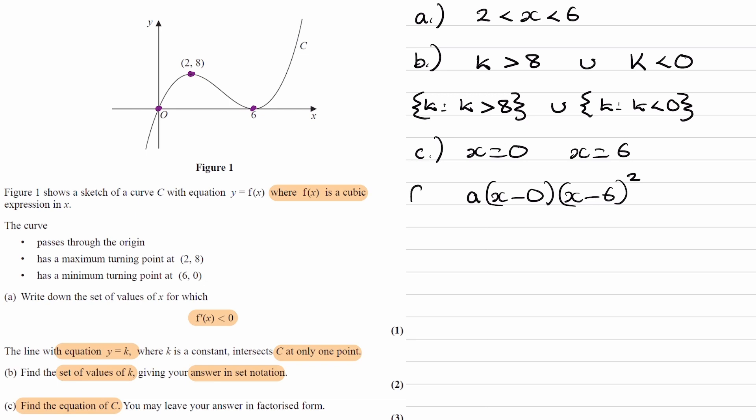So this is f of x. We need to work out what a is. We have this coordinate here that we can use. The reason I've picked that one specifically, as opposed to these two, is because if we were to put in x is equal to 0 or x is equal to 6 into this, because those are our roots, well, these brackets will just end up being 0. This will be 0, or this will be 0, if we put in x equals 0 or x equals 6.